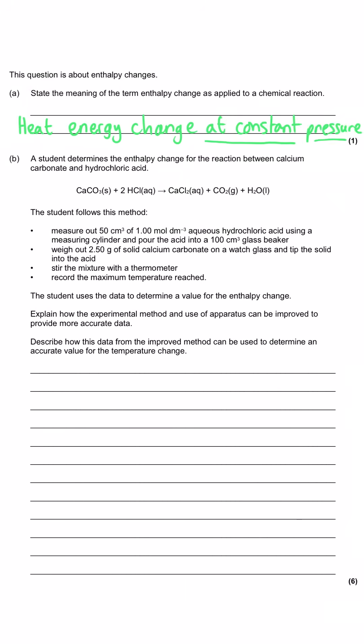Part B gives us a very specific calorimetry experiment for us to analyze and unpick. In this calorimetry experiment calcium carbonate which is a solid is being added to hydrochloric acid and that will be an acid base reaction making calcium chloride salt, carbon dioxide and water. We've got a method that we can unpick and in this method they are adding certain quantities of the reactants together in a beaker, stirring the mixture and recording the maximum temperature that is reached.